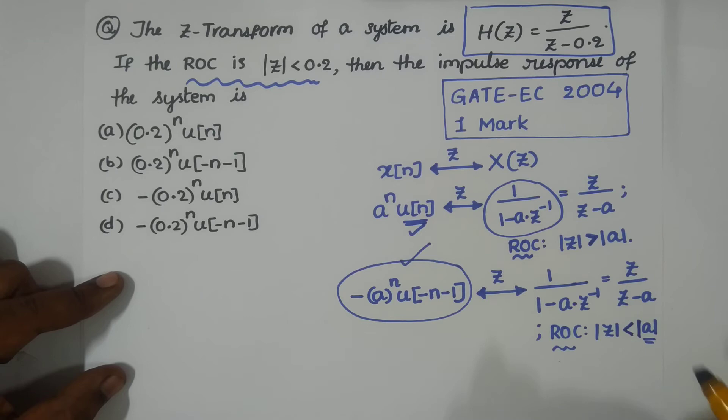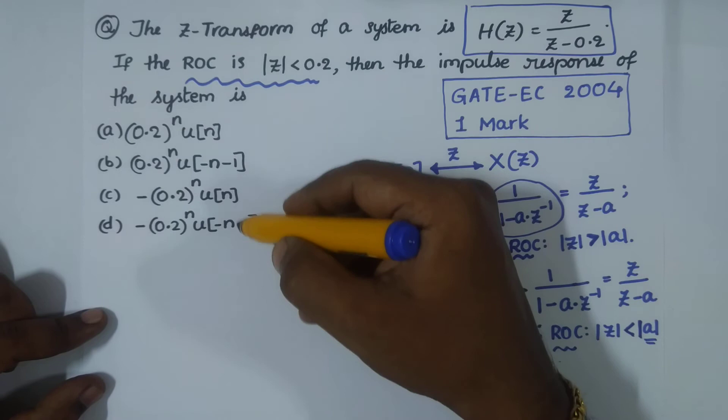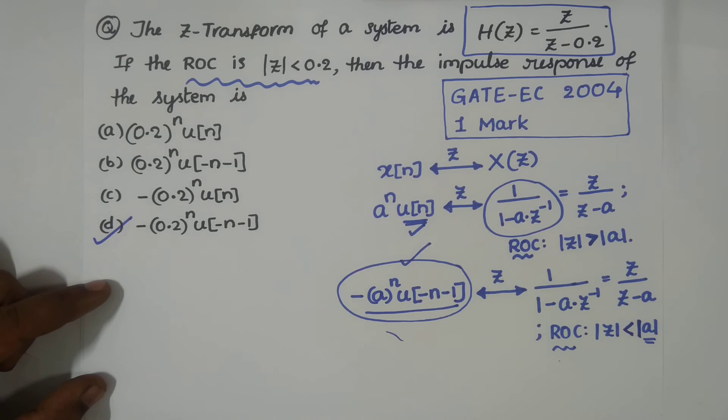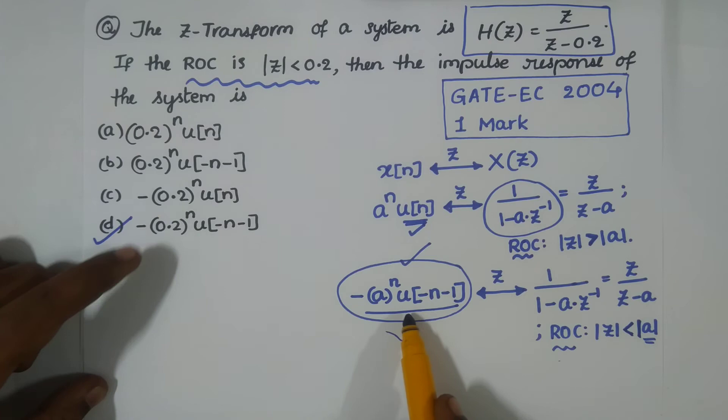Now which of these four options satisfy this? It is obviously option D. In place of a we have 0.2, minus power n, and everything is as it is.